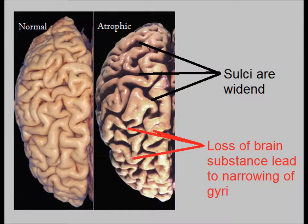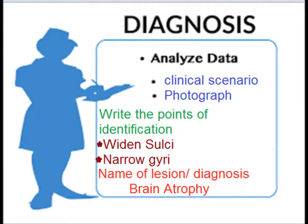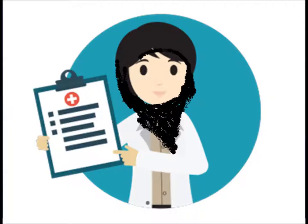Now we will analyze the data, clinical scenario, and provided photograph. The points of identification are: widened sulci and narrowing of the gyri. The diagnosis is brain atrophy.